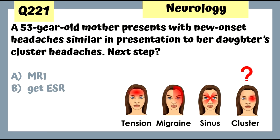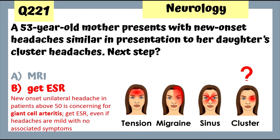Question 221: A 53-year-old mother presents with new onset headaches similar to her daughter's cluster headaches. The next step is to assess for giant cell arteritis by getting an ESR, because new onset unilateral headache in patients above 50 is concerning for this condition.